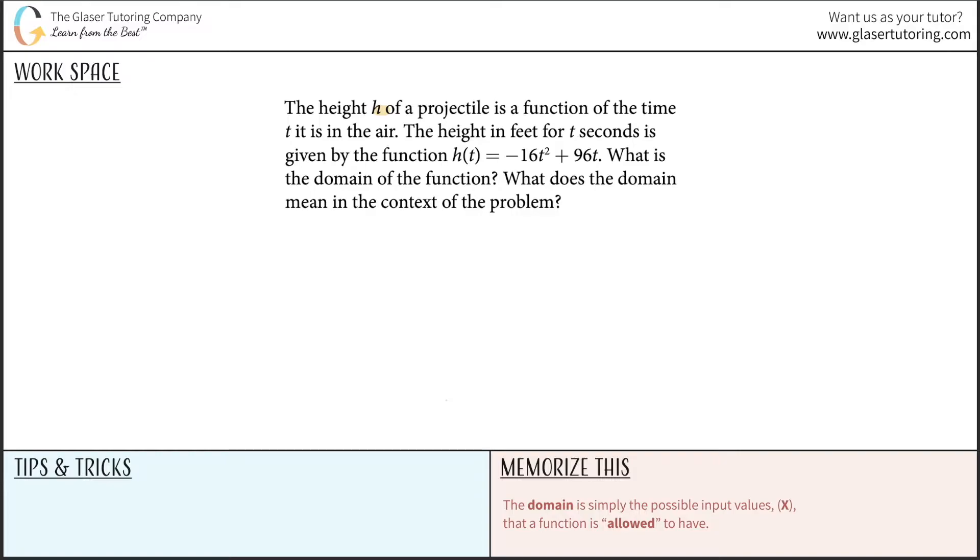The height h of a projectile is a function of the time t it is in the air. The height is in feet for t seconds and is given by the function h(t) equals negative 16t squared plus 96t. What is the domain of the function?